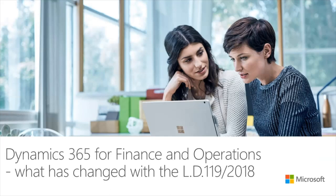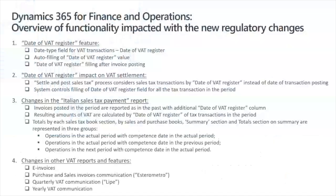Our presentation today is more for companies which intend to apply this so-called invoice simplification. In the next part, I will tell you about what changes are introduced in Dynamics 365 for Finance and Operations to accommodate these requirements. First of all, the update introduces a new date type field which is called Date of VAT Register. This will allow users to specify, additionally to document date and transaction date, a specific date when the VAT point took place. This date will appear in all the documents where VAT transactions can be created and posted through the system.